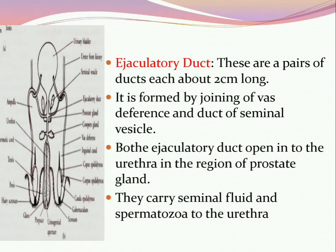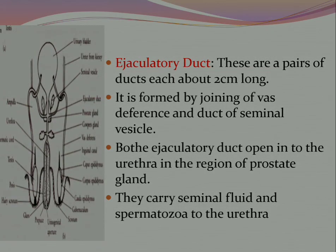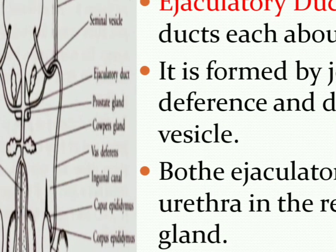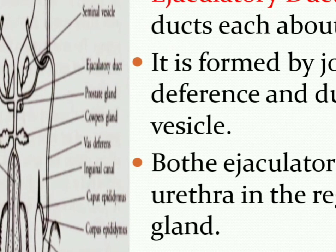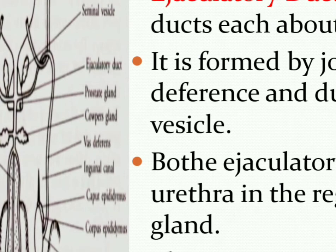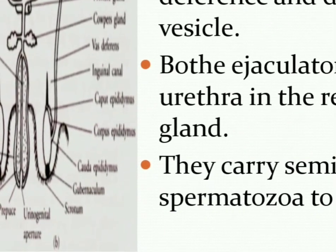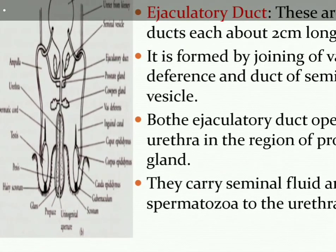The ejaculatory ducts are a pair of ducts, each about 2 cm long, formed by the joining of the vas deferens and the duct of the seminal vesicle. Both ejaculatory ducts open into the urethra in the region of the prostate gland, carrying seminal fluid and spermatozoa into the urethra.